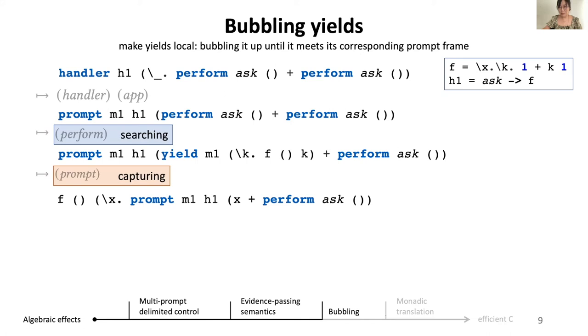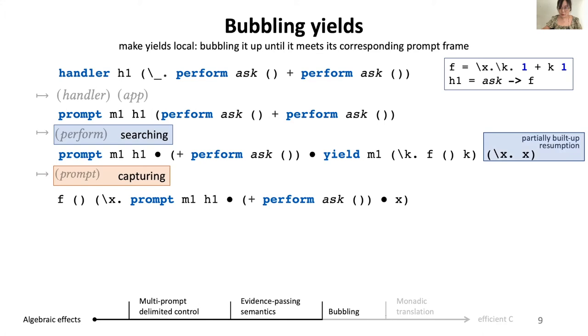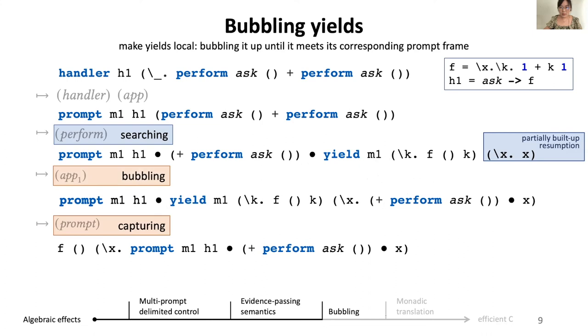We use bubbling to make yields local by bubbling a yield up until it meets its corresponding prompt frame. To see the idea of bubbling more clearly, let's first make the call stack more obvious. For example, in the third expression, we will first do yield, whose result will be added to perform ask, and the whole computation is guarded by a prompt. We can also do the same to the resumption. Now it is more obvious that during capturing, we are capturing multiple frames at the same time. With bubbling, we are going to bubble up the continuation in little parts. When we are yielding, we keep the currently partially built-up resumption as an extra argument to yield, starting from the identity function. We extend it with every frame, one at a time, until we meet the prompt where the resumption is now complete.